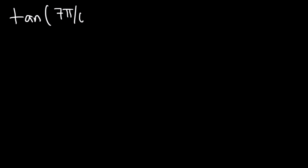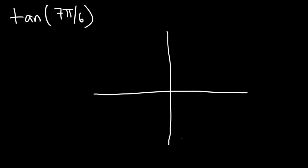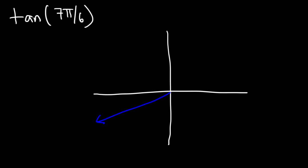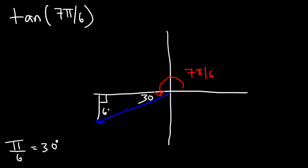Now let's evaluate tangent of 7π/6. This angle is in quadrant 3. Recall the key radian markers: π/6, 5π/6, 7π/6, and 11π/6. The angle 7π/6 forms a reference angle of π/6. Since π equals 180, dividing by 6 gives 30 degrees, so we have a reference angle of 30 and once again we use the 30-60-90 triangle.